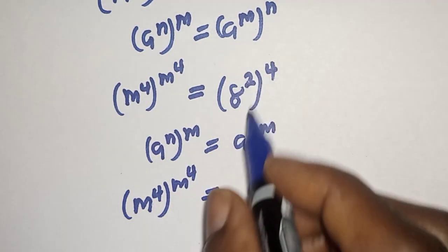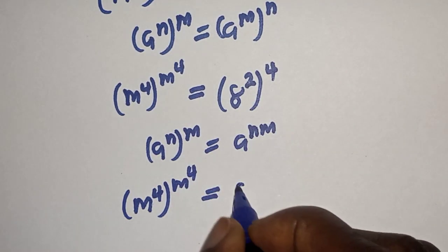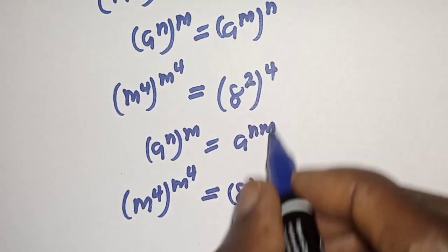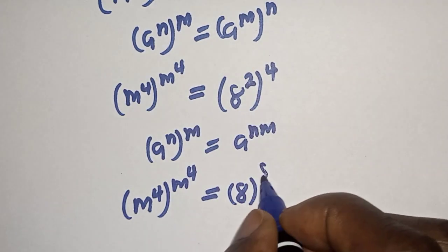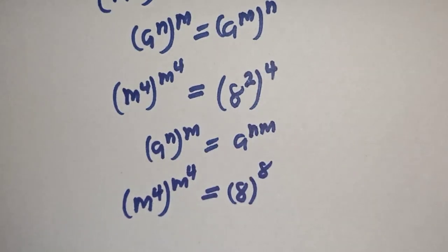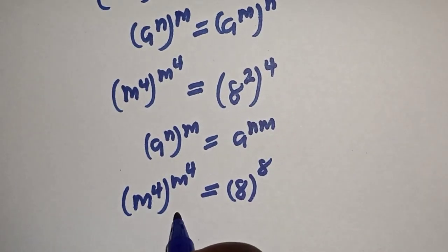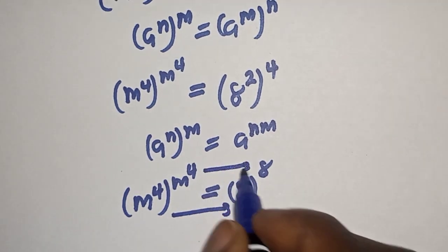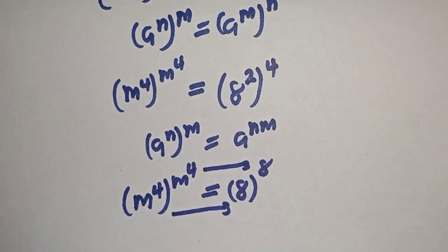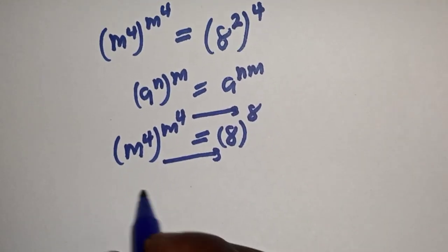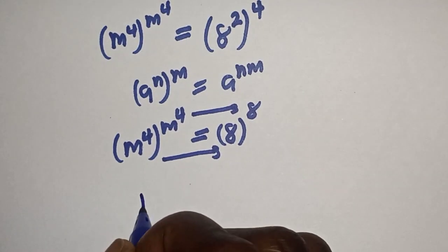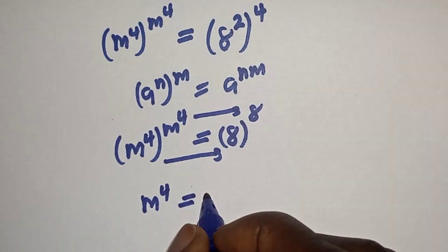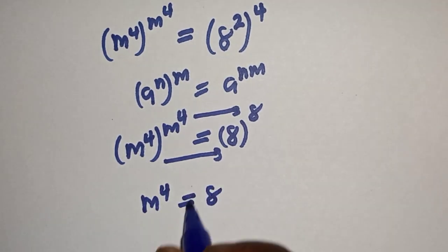So m raised to power 4, to the power of m raised to power 4, is equal to 8 raised to the power of 2 times 4. By comparing both sides, m raised to power 4 is equal to 8.